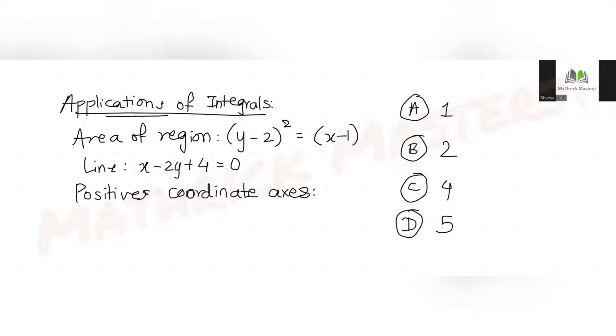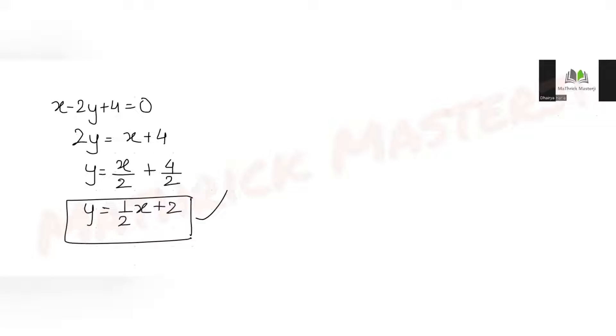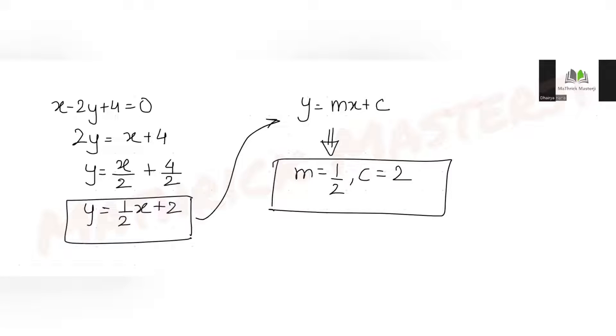We have been given two equations: the equation of a parabola and the equation of a line. Let's first work with the line. The line equation is x - 2y + 4 = 0. Rewriting in slope-intercept form y = mx + c, we get 2y = x + 4, so dividing by 2 gives y = x/2 + 2. The slope is 1/2 and the y-intercept is 2, meaning the line intersects the y-axis at (0, 2).